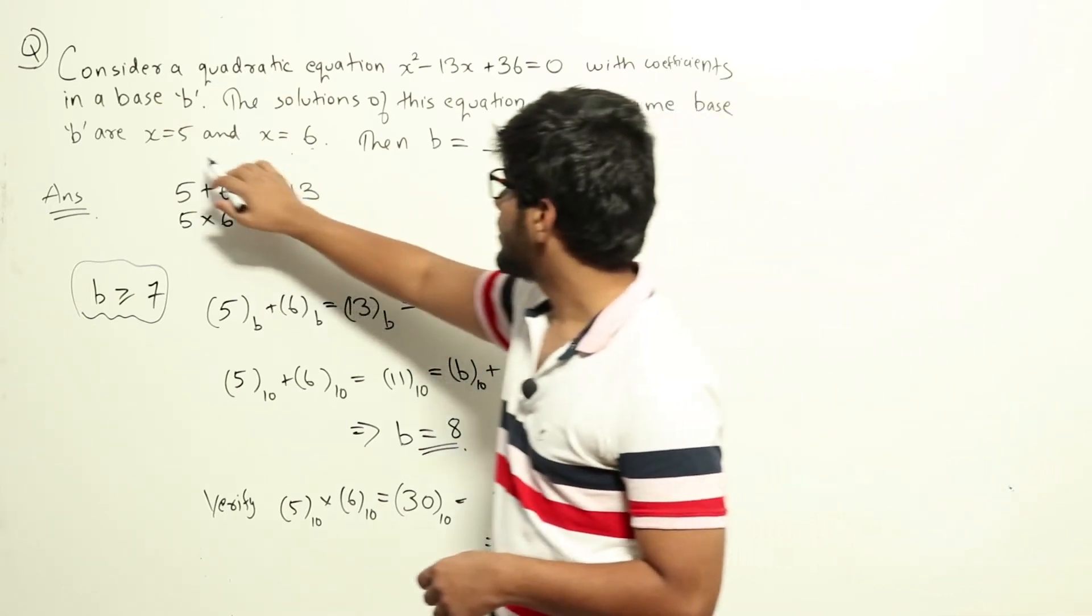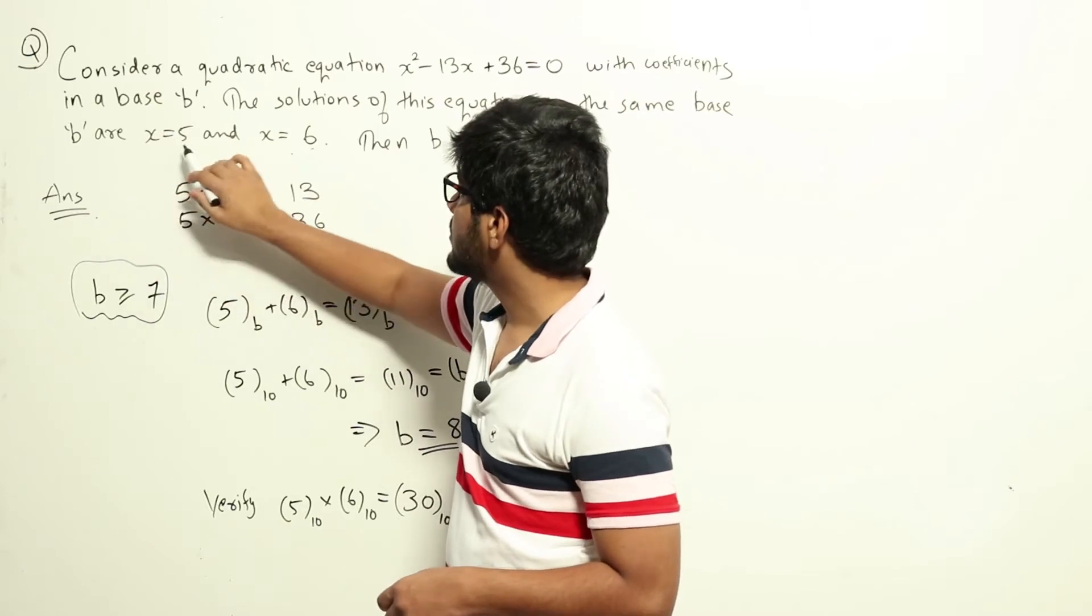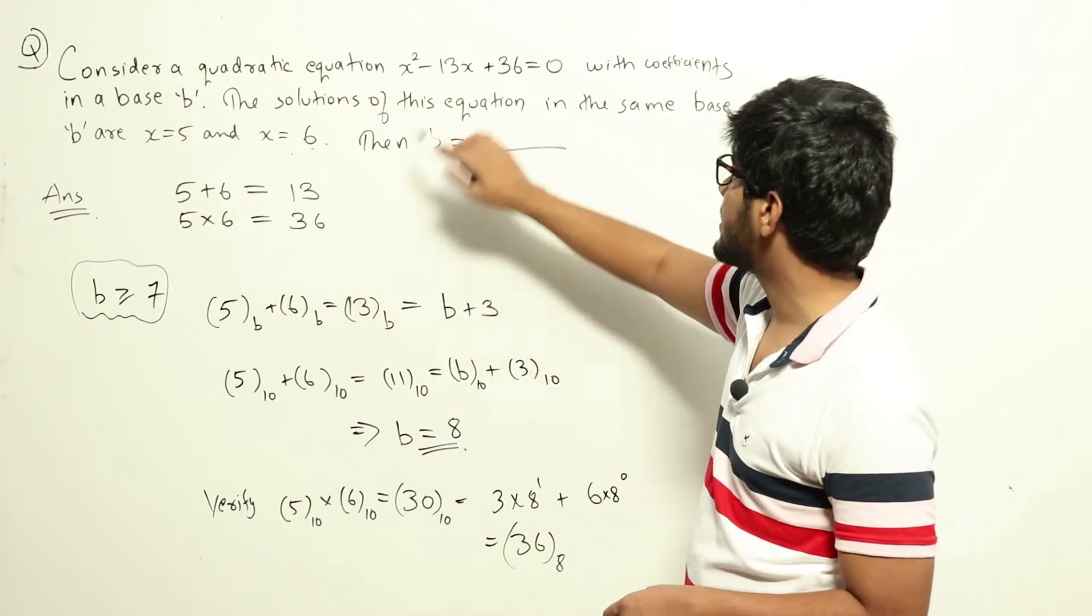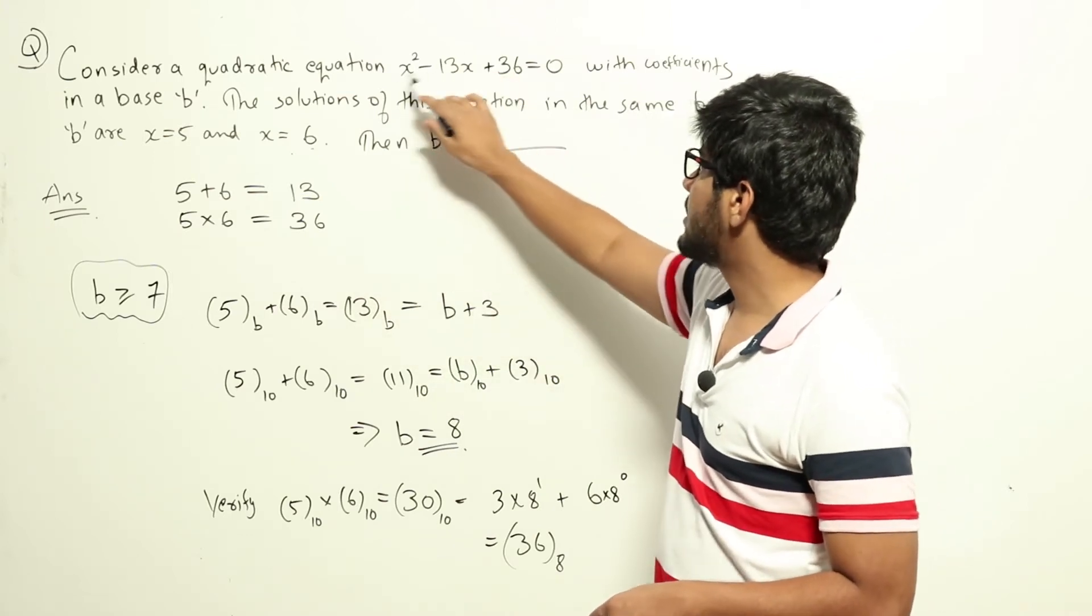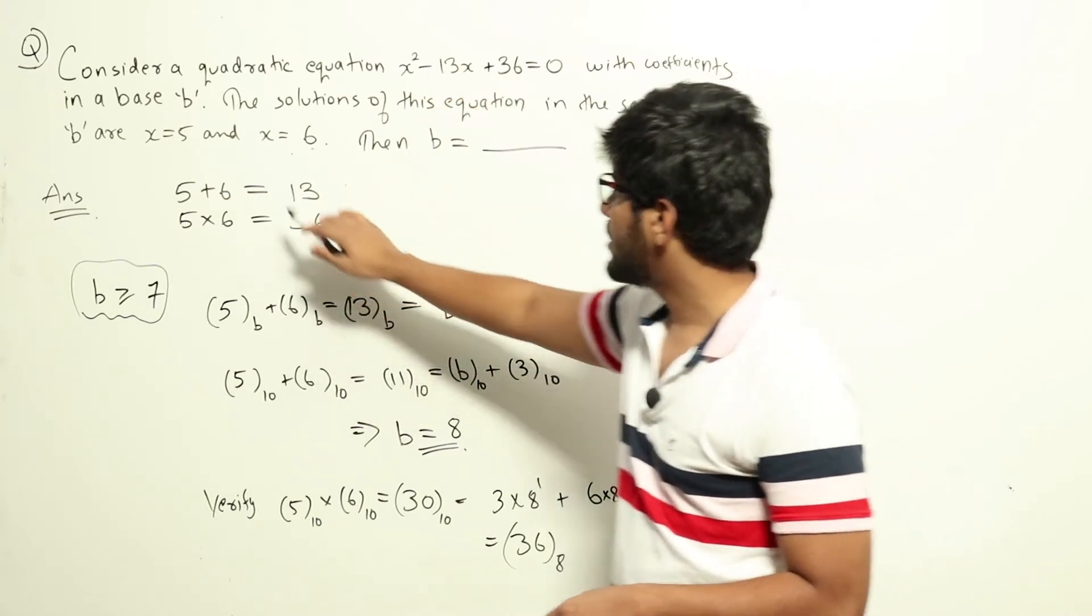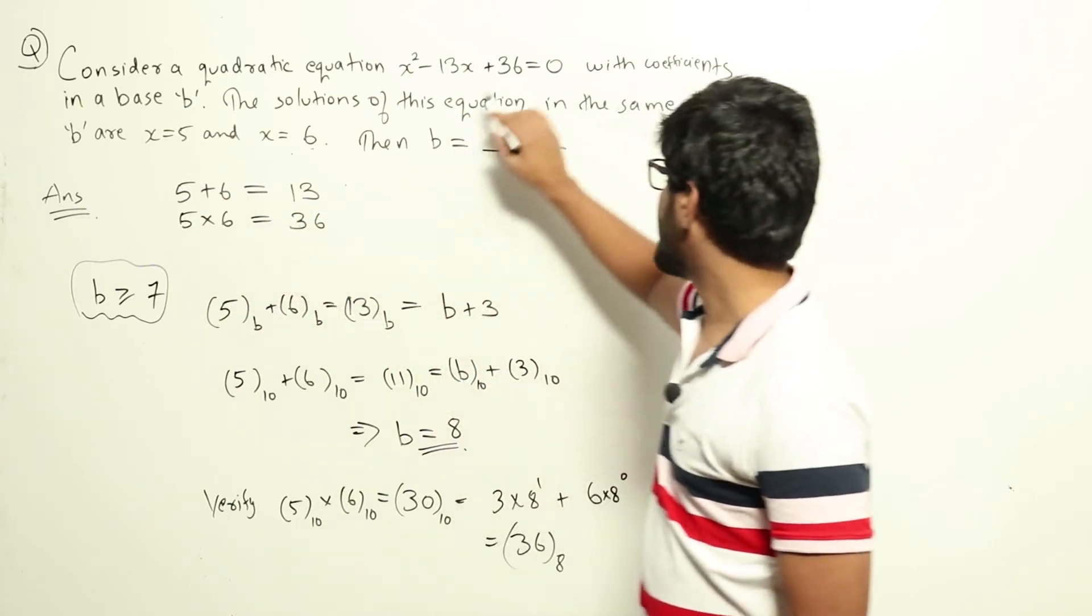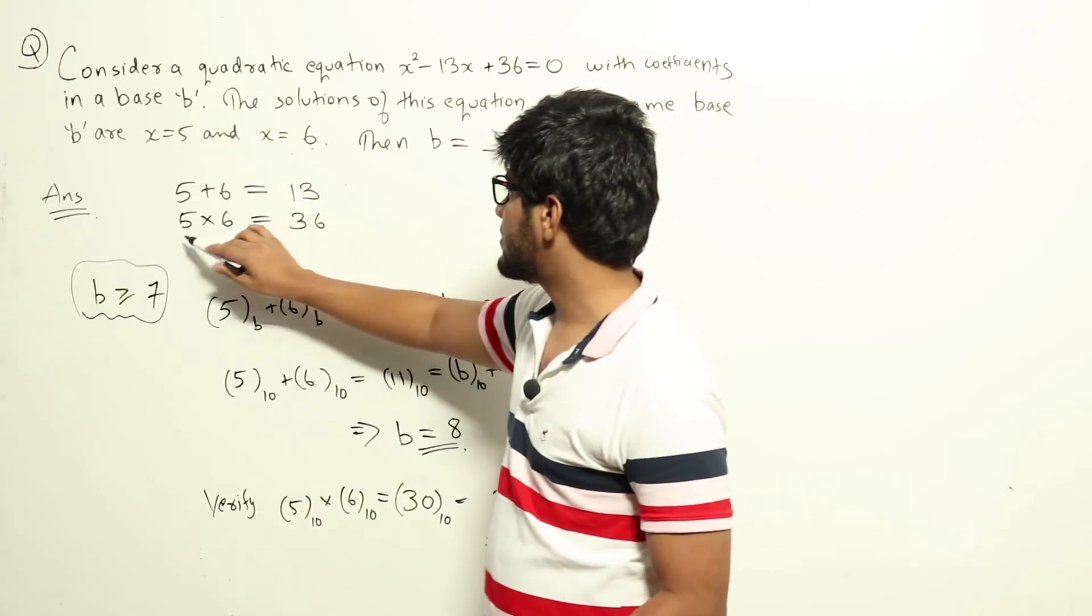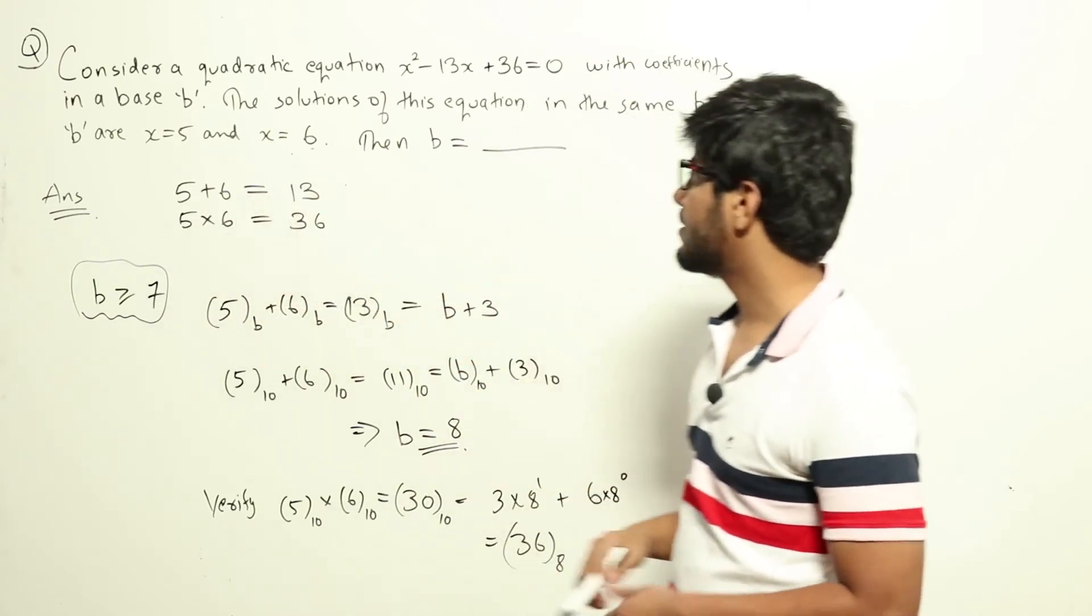So here we have been given the solutions are 5 and 6. In that case, 5 plus 6 will be equal to minus b by a, that is minus of minus 13 by 1, that is 13. And the product 5 into 6 will be c by a, that is 36. Now these numbers are not in base 10, these are in base B.